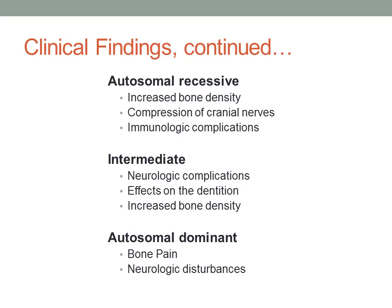The autosomal dominant form is oftentimes not discovered, as nearly one-half of cases are asymptomatic and less aggressive, with discovery of the disease occurring at the time of a pathologic fracture. When cases become severe, bone pain and neurologic disturbances may occur.